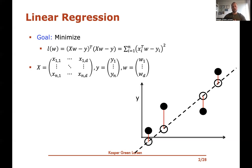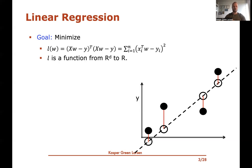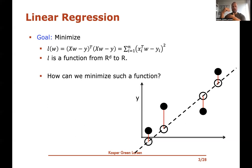Now we would like to show how you can actually minimize this expression. To minimize it, we start by observing that the loss l is really a function from d variables to a single number — the d parameters in w map to a single output value. So it is a function from R^d to R, and the question is how we can minimize such functions.